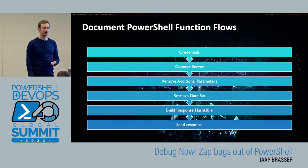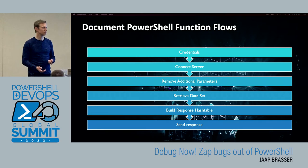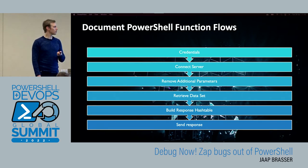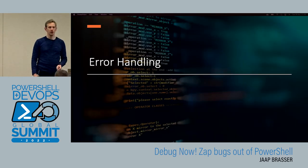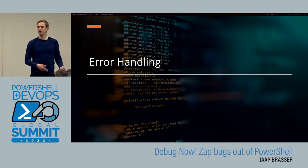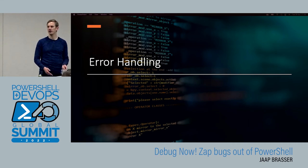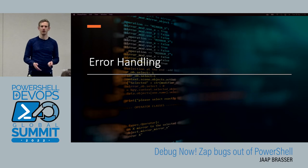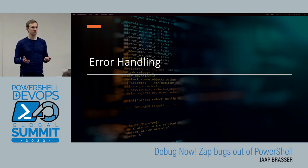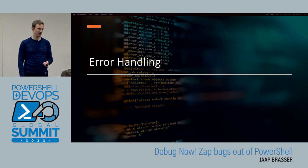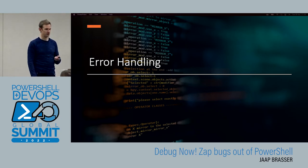Let's get into error handling. Error handling in PowerShell — we have a lot of different tools at our disposal. There are a lot of automatic variables and constructs available. The most used one is of course try-catch, but we have a couple of other tricks as well.